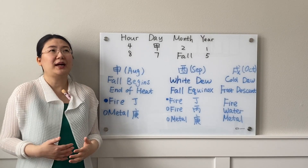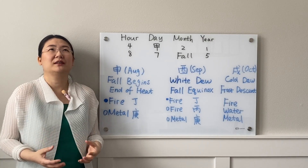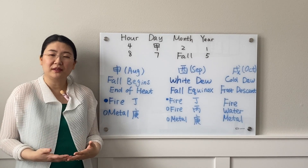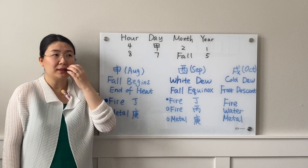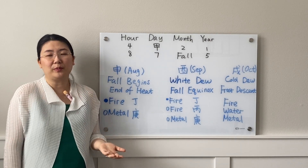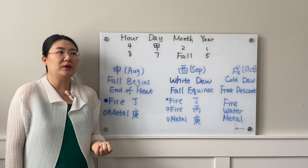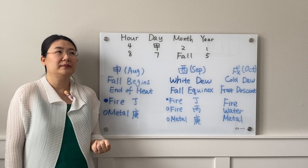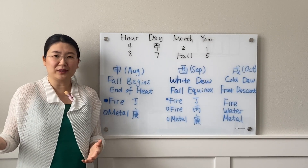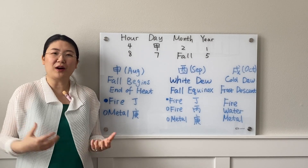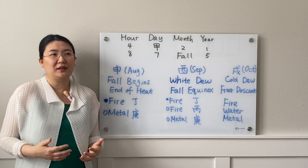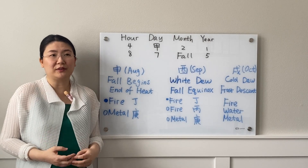Metal has more restriction, calm, and conservative characteristics to it, so relatively speaking a Yang Wood person born in fall is more introverted compared to the summer Yang Wood, who are more extroverted. Fall people are more conservative, modest, and introverted.